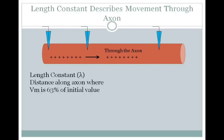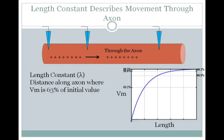If we look at that graphically, your lambda is going to equal the length on the axon where you get 63% of the membrane voltage change.